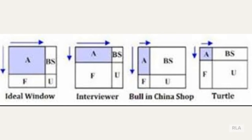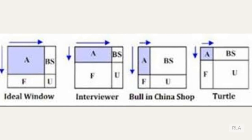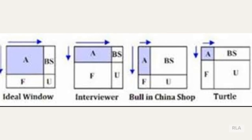There are certain generalized patterns of the Johari Window, represented here in this picture. The first is the ideal window — notice that the open area is large and all the other windows are relatively small. That's your ideal relationship. The next type is the interviewer window: an individual who is always asking questions and getting feedback about themselves but discloses very little. Therefore, their blind window is small but their hidden window is very large.